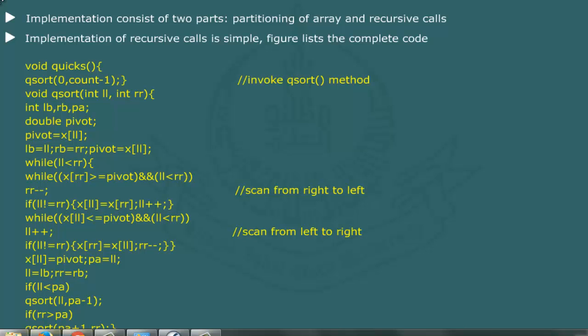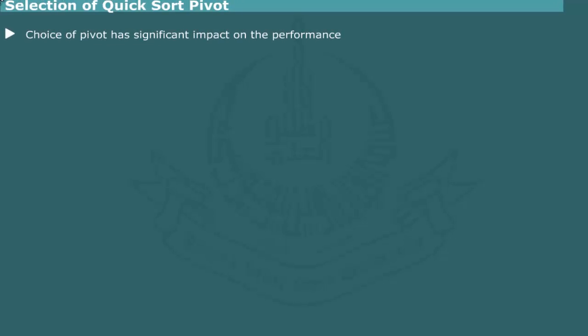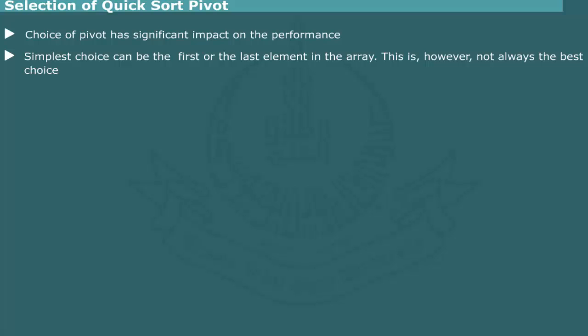The last part of the code contains two recursive calls to process the left and right subarrays. Please click button to run interactive program for shell sort. Selection of quicksort pivot. Various studies show that choice of pivot has a significant impact on the performance of quicksort algorithm. As already discussed, the simplest choice can be either the first or the last element in the array.